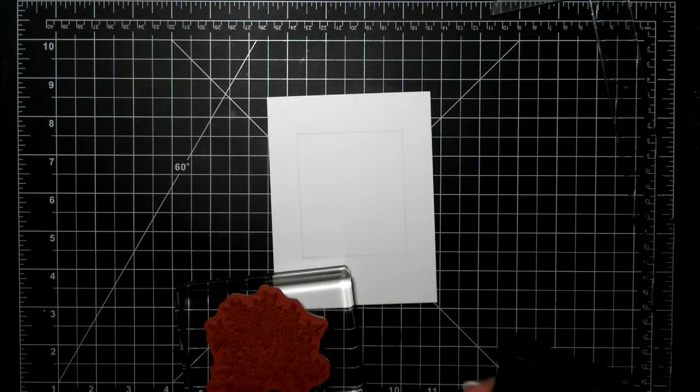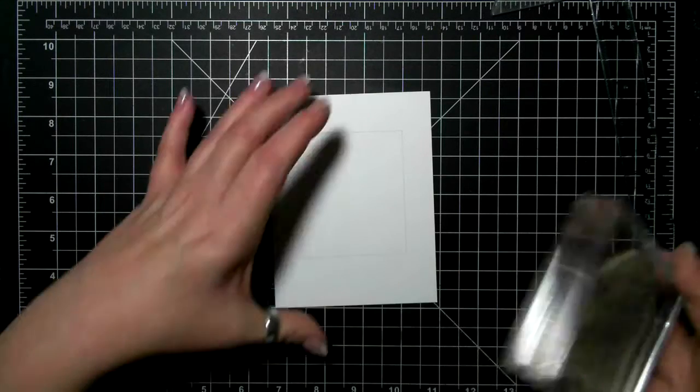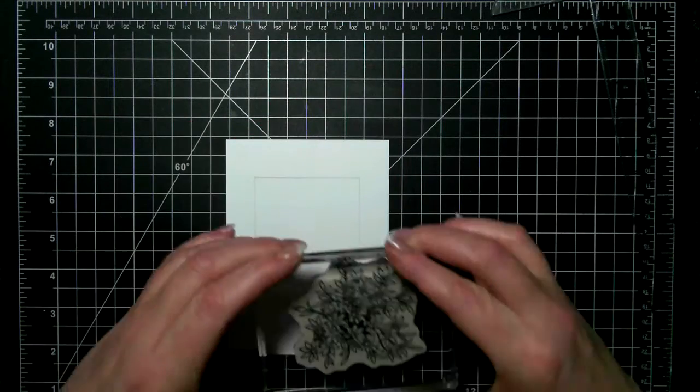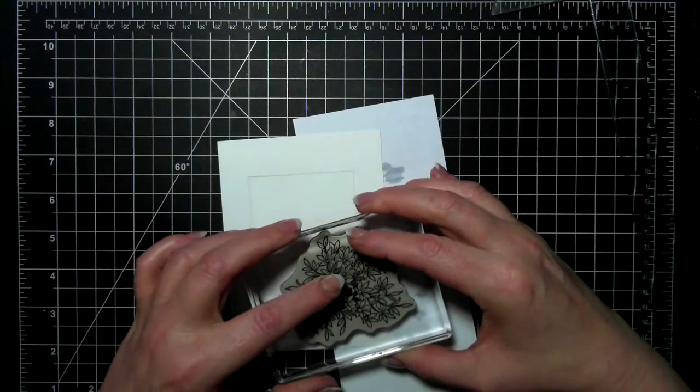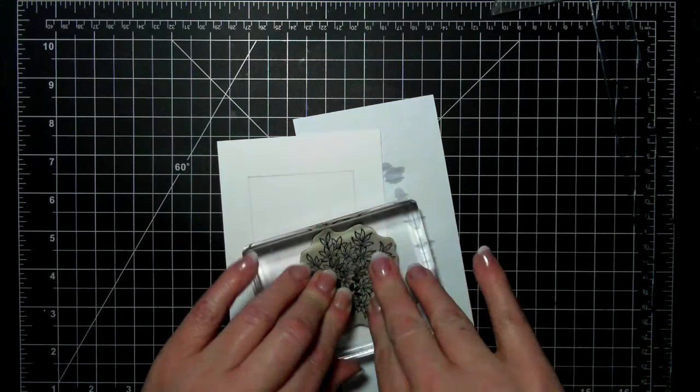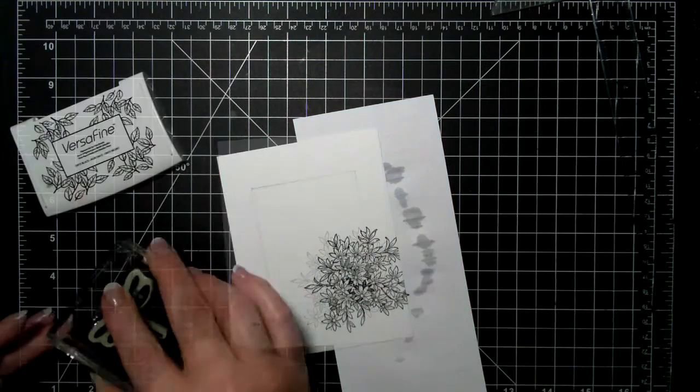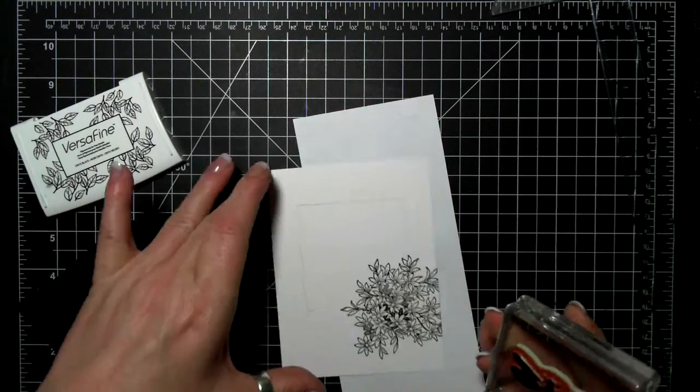So I ended up using my embossing buddy. I embossed that flowering bush from the Awesomely Artistic set just using VersaFine which also Stampin' Up! does not sell but it's a black ink that you can emboss over.